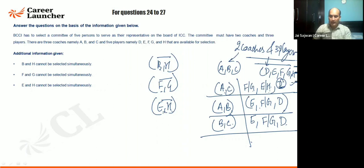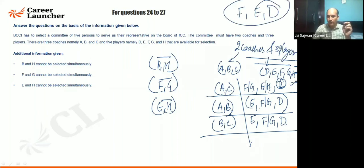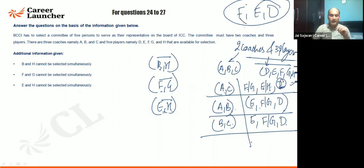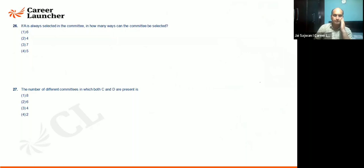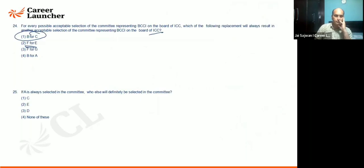If replacing F for E: if F is selected, E is selected, and D is selected, that combination F-E-D would be invalid since out of F and G one must come, and out of E and H one must come — they cannot both be freely swapped. So F for E is unacceptable.